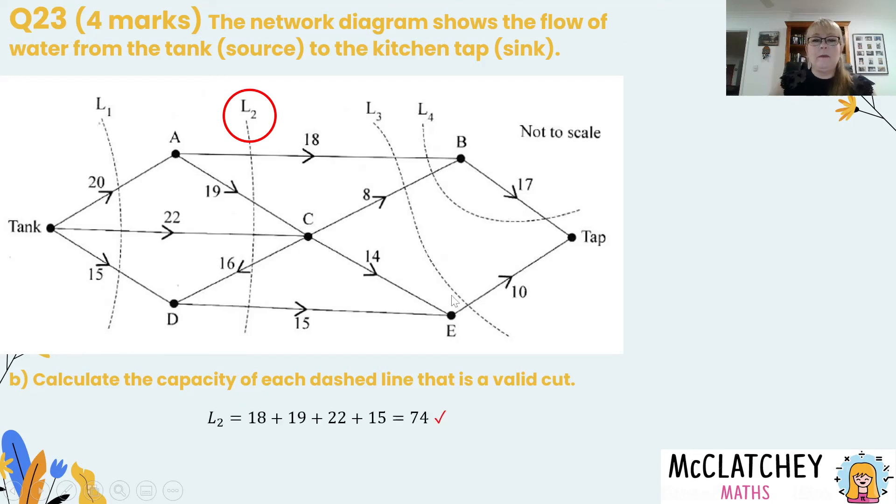Our last cut that we need for our final mark on this question is passing through 18, 8 and then down here a 10. So that's going to give us a total capacity of 36.